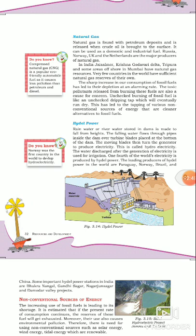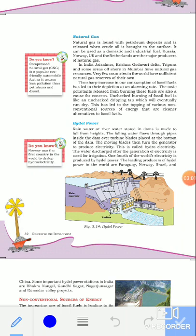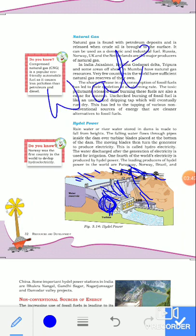Hydro power is one such alternative. Rain water or river water stored in dams is made to fall from heights. The gates are opened and turbines are fixed which rotate, storing energy that is then supplied through electric lines and wires. The moving blades turn the generator to produce electricity, and this is called hydroelectricity — the word 'hydro' means water.